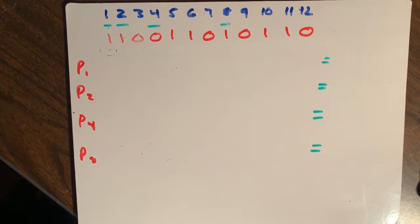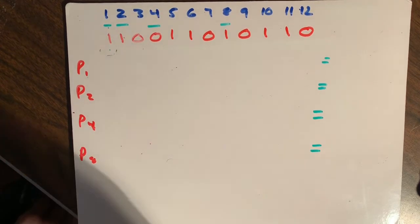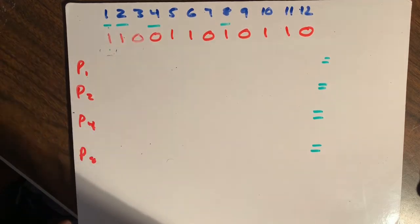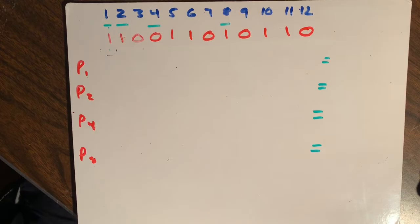Hi, in this video we're going to show how to find the uncorrupted bit in a Hamming code. The question says binary 1100110110 is an even parity 12-bit Hamming code that contains a single bit error. What is the corresponding uncorrupted Hamming code?